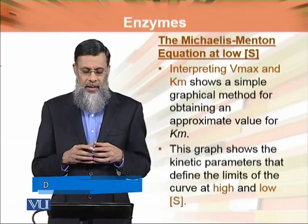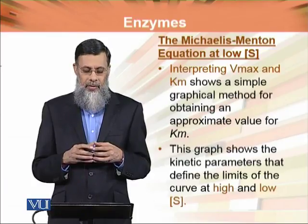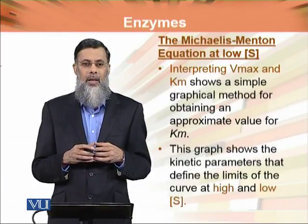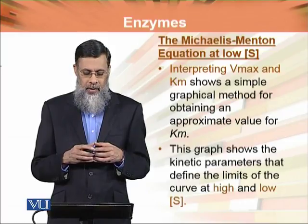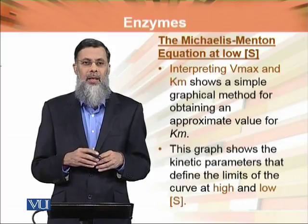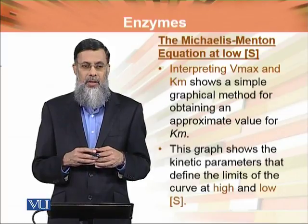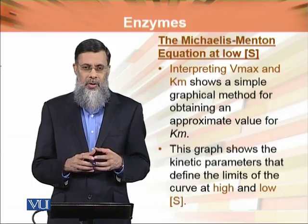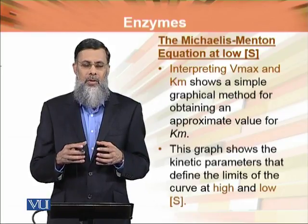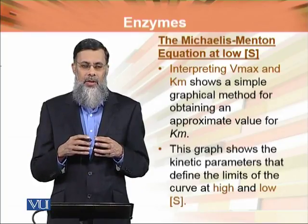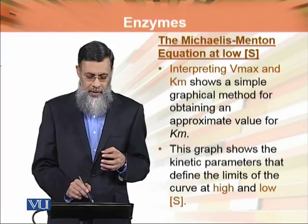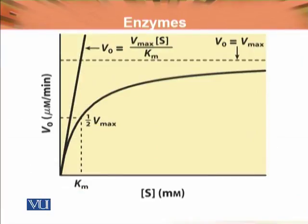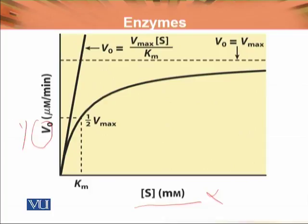Interpreting Vmax and Km shows a simple graphical method for obtaining an approximate value for Km. This graph shows the kinetic parameters that define the limits of the curve at high and low substrate concentration. First we will define this at low substrate concentration graphically, then prove it mathematically. We have drawn the hyperbolic curve with substrate concentration on the x-axis and V0 (initial velocity) on the y-axis.